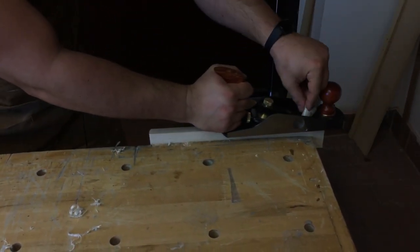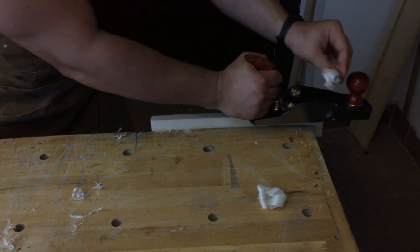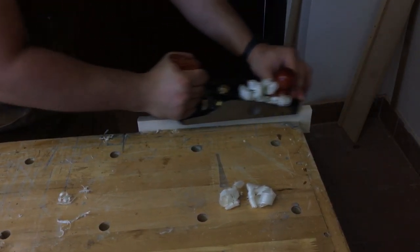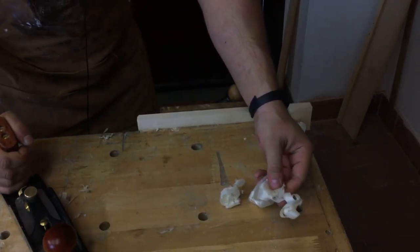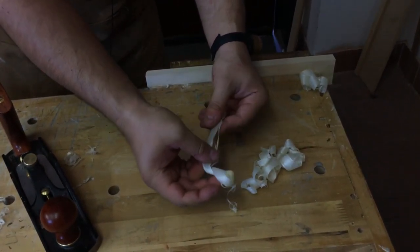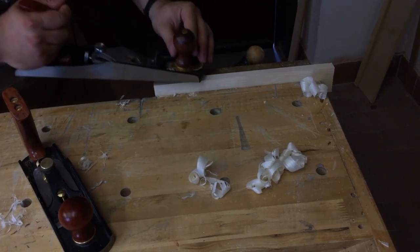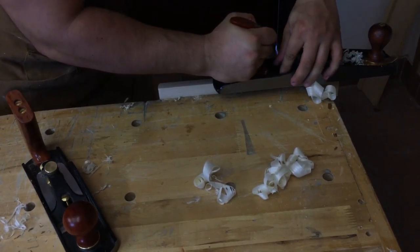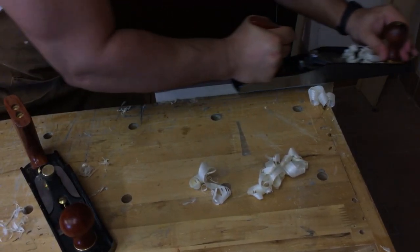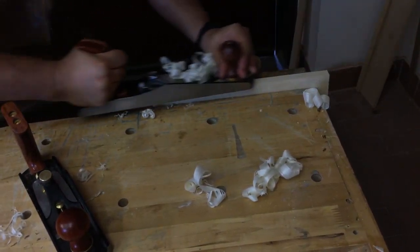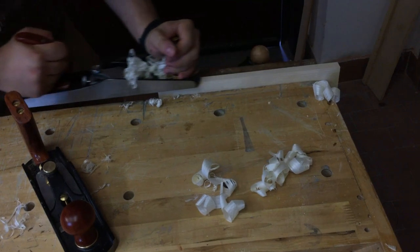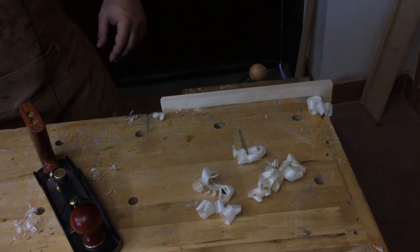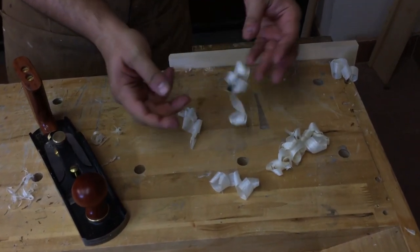Here is the Veritas mounting plane. As you can see we can compare the results. This is the Veritas and this is the Alex one. They are pretty much the same. Super tiny shavings on softwoods.